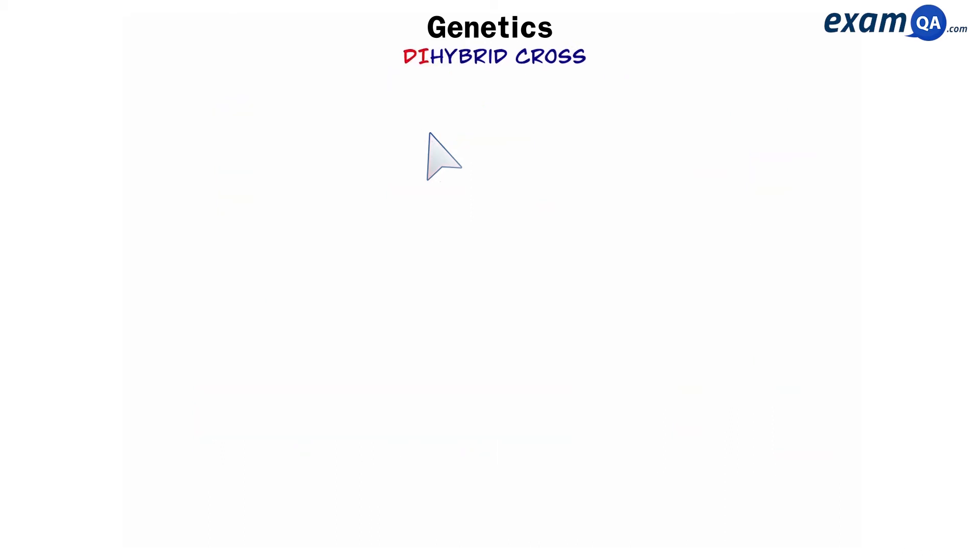However, in A levels, we get to learn about dihybrid crosses. So that means we're going to look at gene A, hair colour, brown and blonde, but also another gene, B, and we'll say B codes for hairstyle. So big B means you're going to have straight hair, and small b means you're going to have wavy hair.